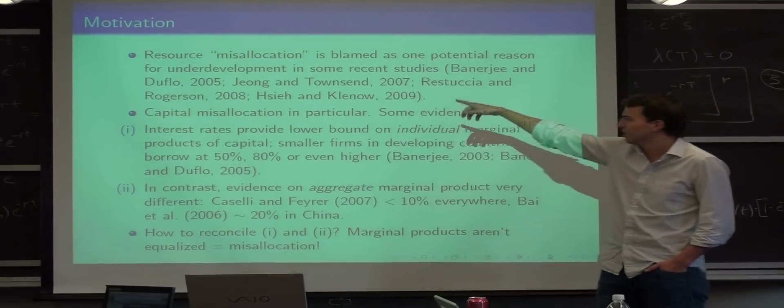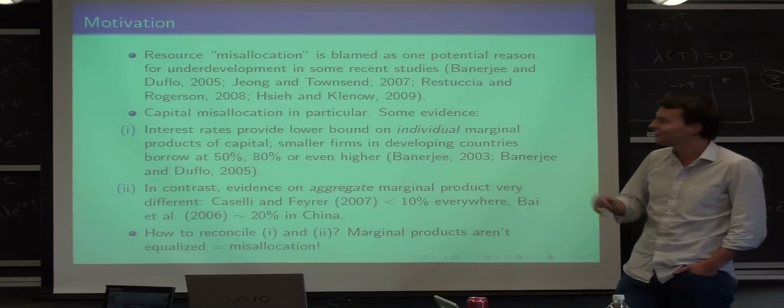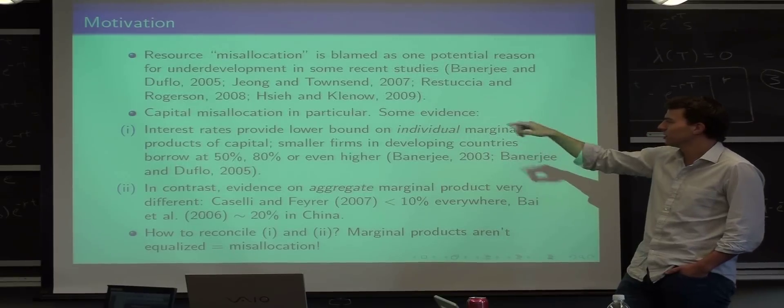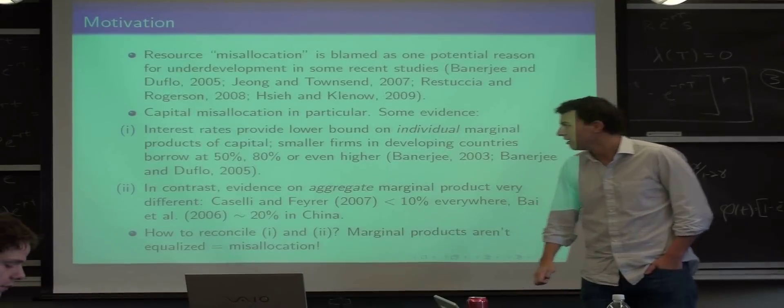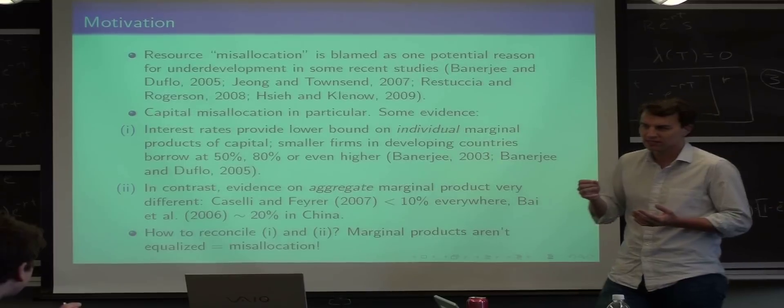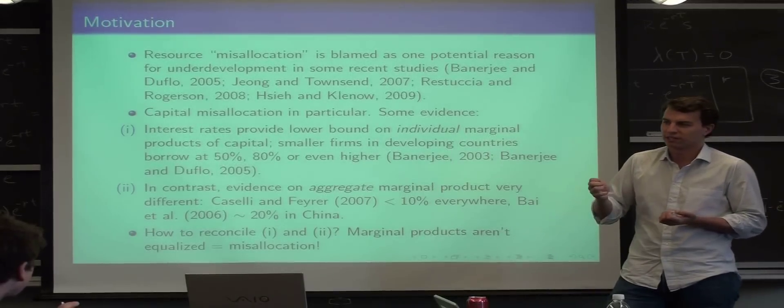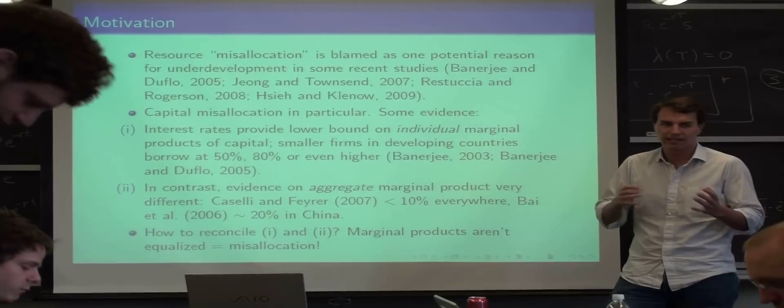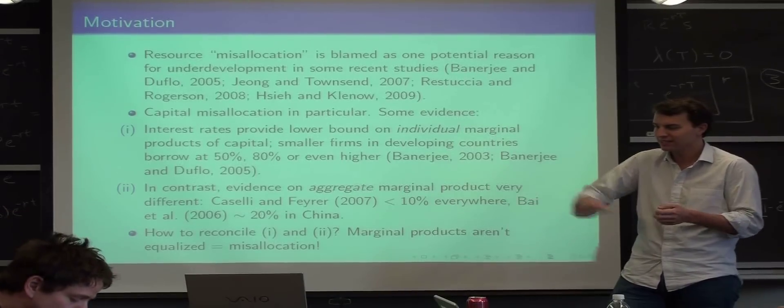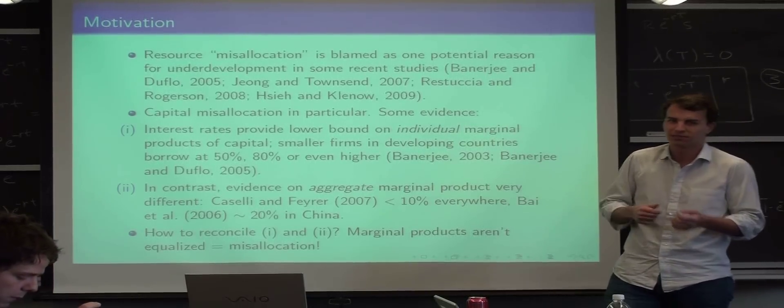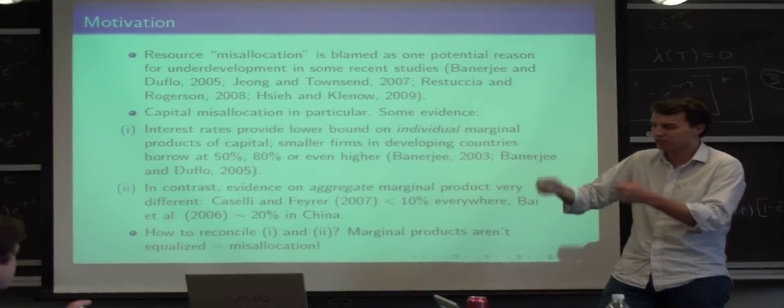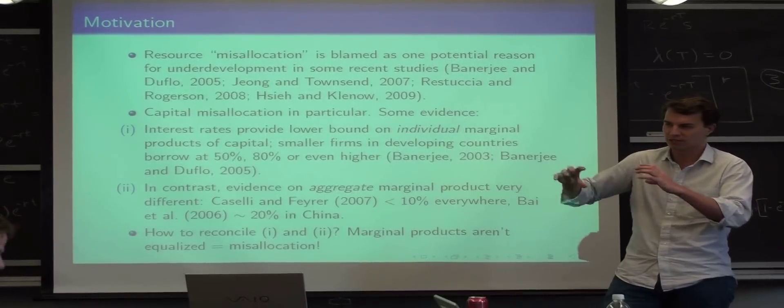So I want to talk about capital misallocation in particular. And so what misallocation in the simplest possible way means is that basically marginal products are not equalized. So there's this idea in economics that the efficient allocation of... if you have two guys, and they have some sort of production function that depends on capital or labor or whatever, you should distribute the resources so that the marginal products are equalized across the two guys.